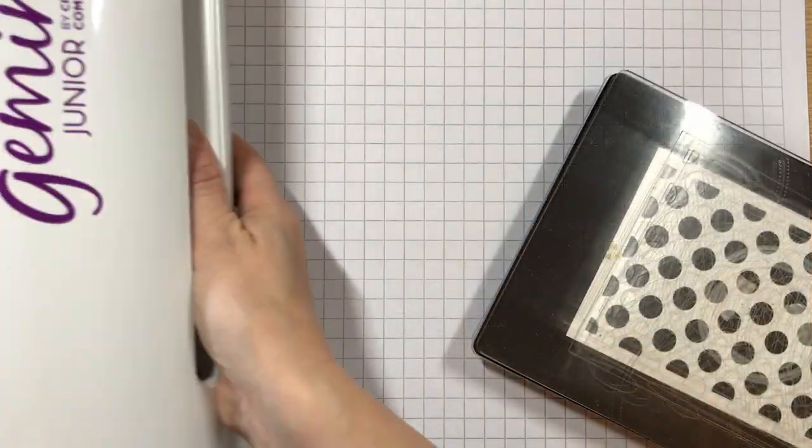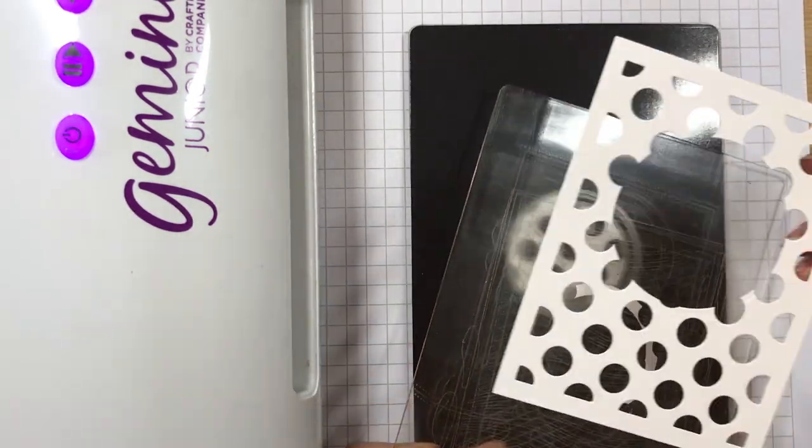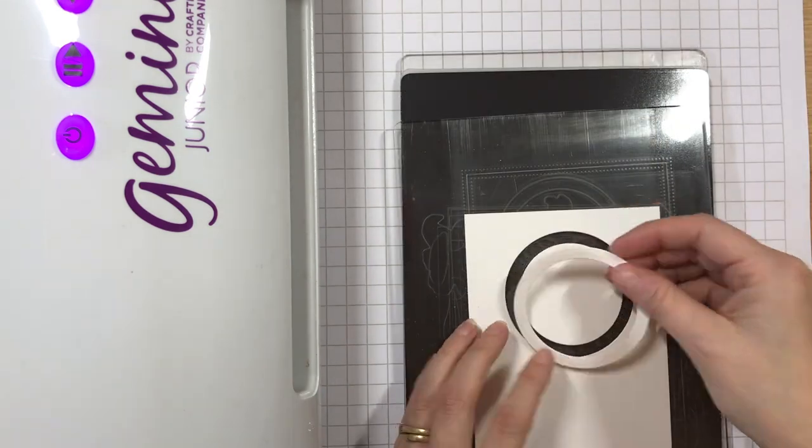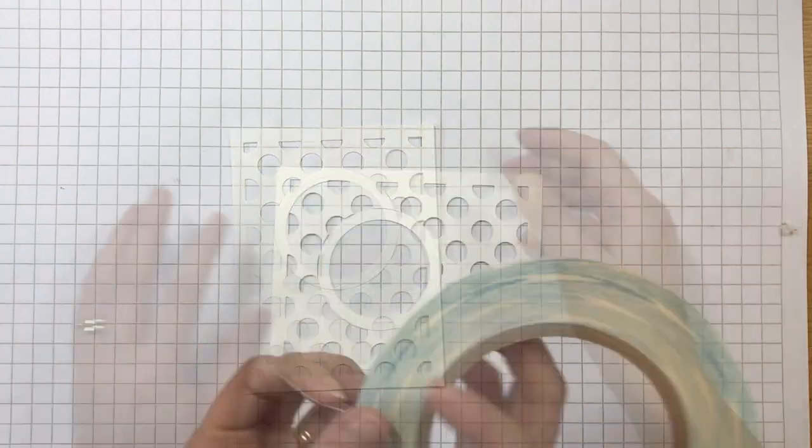My dies still happen to be connected, but if you're using dies that are separated, you can either hold them in place with washi tape or use a magnetic shim if you have one. Next, I used the dies again to cut a frame which I then pieced into the panel and held in place on the back with tape.